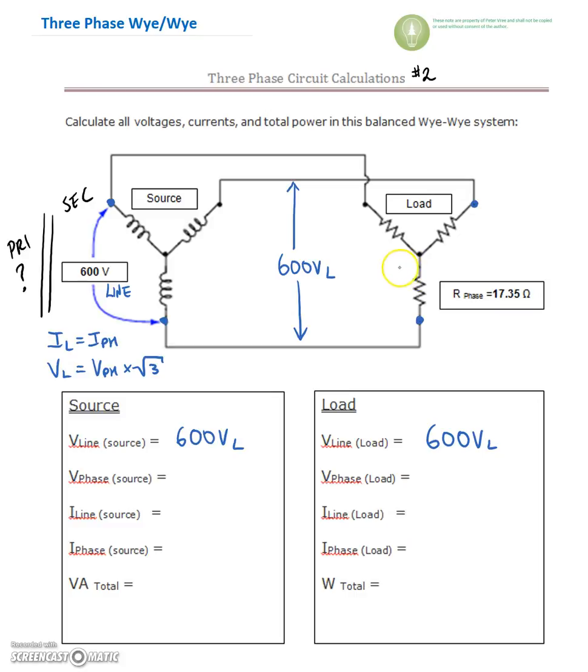So our phase voltage, which is the voltage on the inside, that voltage right there we're going to find by taking 600 volts on the line, and we're going to divide that by root 3. Now it should be 347, right, because we've already memorized those equations.